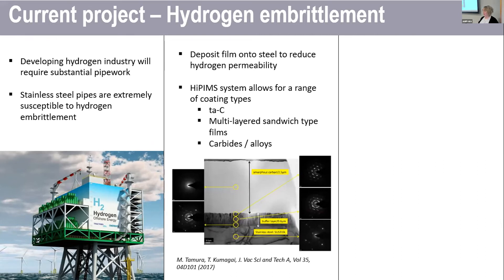HiPIMS allows us to test a range of different films from tetrahedral amorphous carbon, multi-layer sandwich films, carbides and alloys. Here is an example of a film that was demonstrated to reduce permeability of hydrogen using amorphous carbon. So that's an interesting avenue to explore.